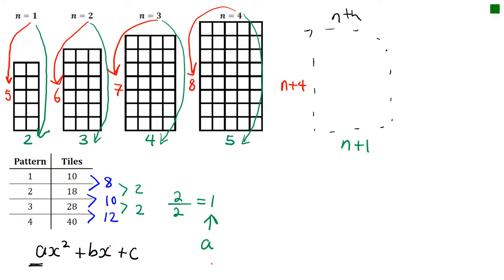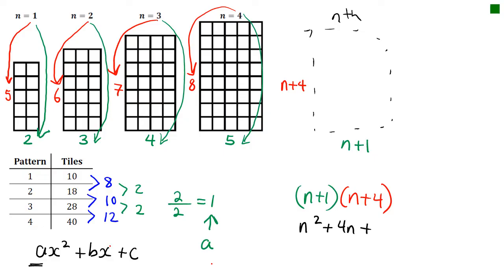When we put these two together, because we're trying to get the area of the shape: 5 times 2 gives us 10 tiles, 6 times 3 gives us 18 tiles, 7 times 4 gives us 28 tiles, and 8 times 5 gives us 40 tiles. Using the same logic, I get N plus 1 times N plus 4 for the nth shape. Multiplying that out gives N squared plus 4N plus N plus 4, which equals N squared plus 5N plus 4.